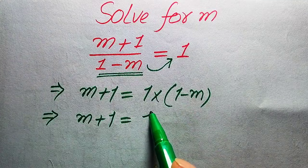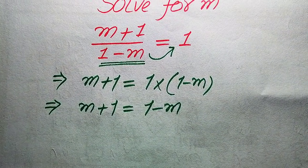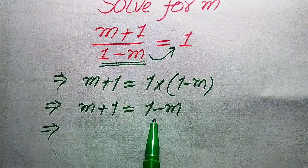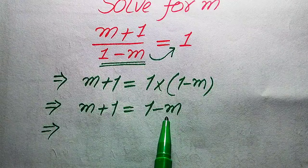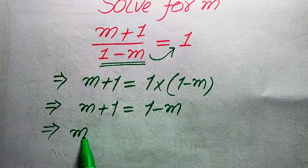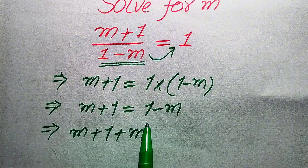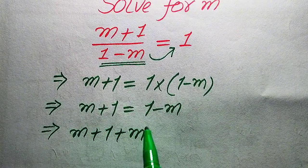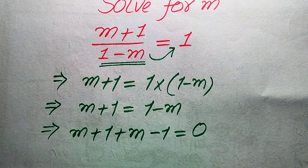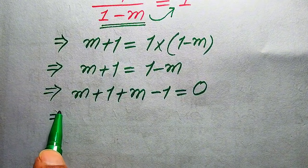In the next step, simplifying: m plus 1 equals 1 multiplied by (1 minus m), which equals 1 minus m. We need to move terms from the right-hand side to the left-hand side. The negative m moves to the left side and becomes positive m, and the 1 moves to the left side and becomes minus 1, so the whole equation equals 0.